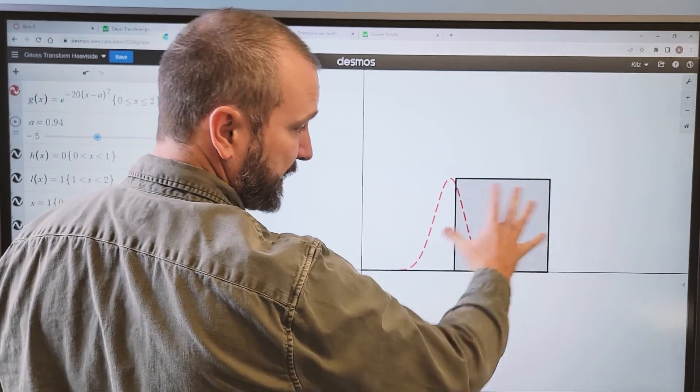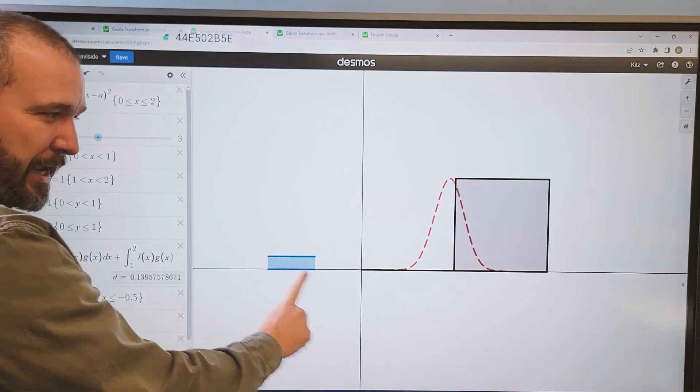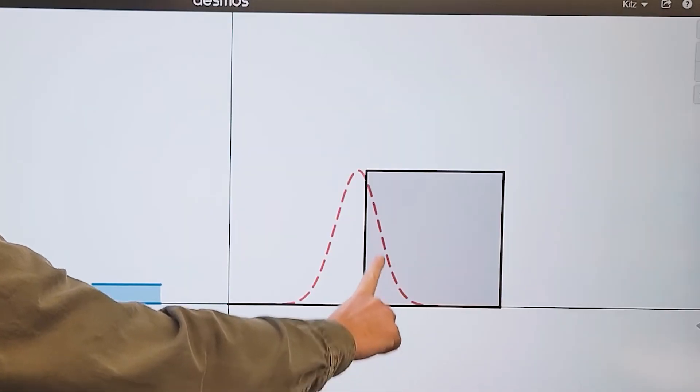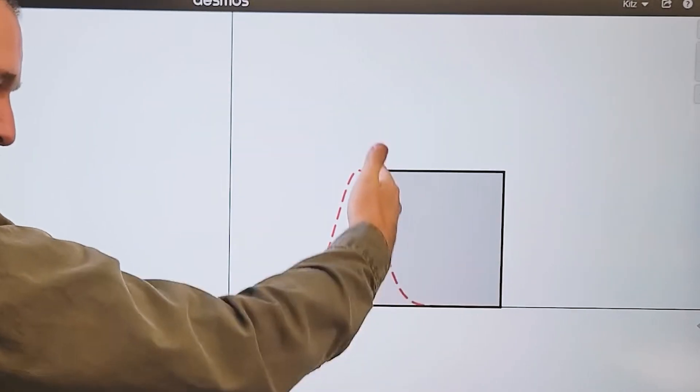even though the density function hasn't gone into the metal plate yet, I do already have some mass because this little piece of it right there is in the metal plate.